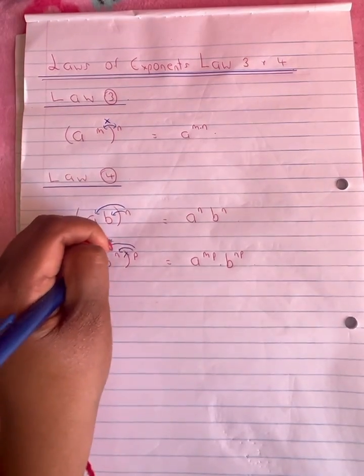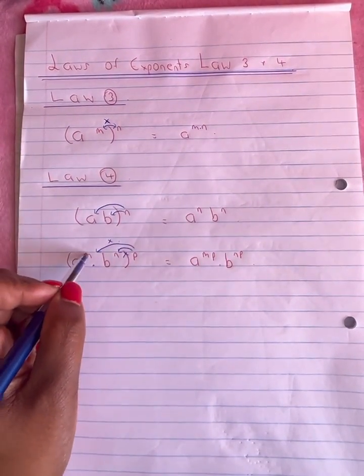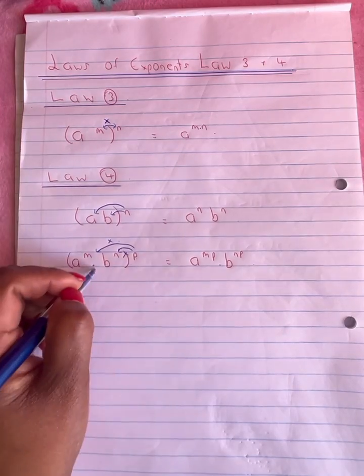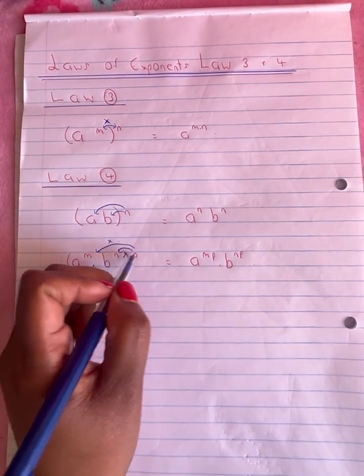So again we are going to multiply. Our answer will be a to the power of m times p times b raised to the power of n times p.